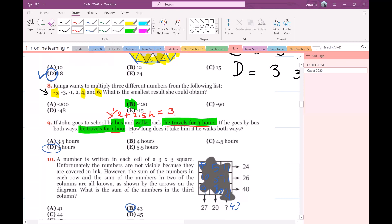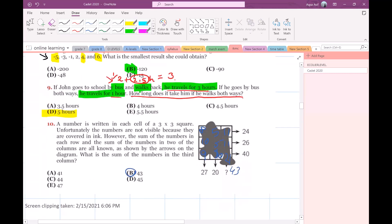We have to find how long does it take him if he walks both ways. So walking one way takes him 2.5 hours. Walking both ways will take 5 hours time. Let's move forward.